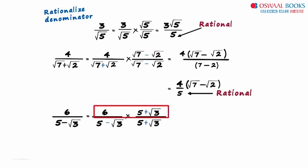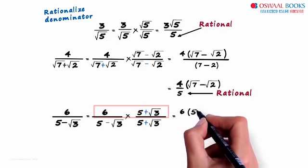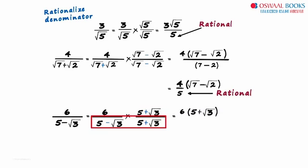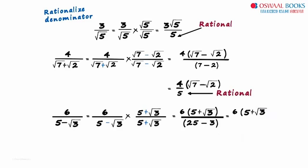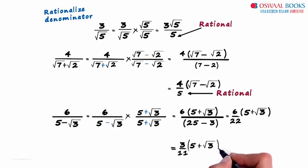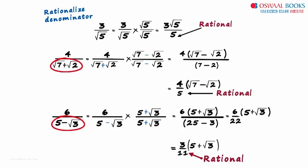The numerator will equal 6 multiplied by 5 plus root 3. The denominator will equal 5 squared minus root 3 squared, which equals 25 minus 3. We can write this as 6 multiplied by 5 plus root 3, divided by 22. Simplifying further, we can write it as 3 by 11 multiplied by 5 plus root 3. Since 11 is a rational number, we have successfully written the original number in standard form. Remember, whenever we have two terms forming an irrational denominator, just change the sign in between to get the rationalizing factor — plus becomes minus and minus becomes plus.